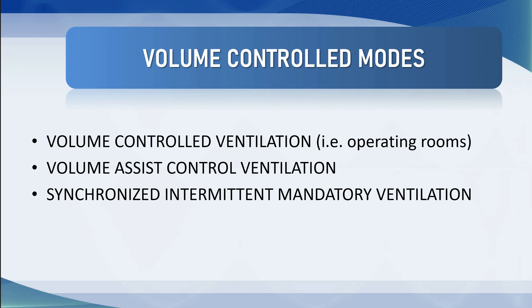There are a number of different volume control modes, but they generally fall into three. One is pure volume control ventilation, though I don't believe pure volume control is built into any modern anaesthetic machines or ICU ventilators — they usually have some accommodation for when the patient starts to breathe spontaneously. If a patient breathes while the ventilator simultaneously delivers a controlled breath, those breaths could be stacked, causing an enormously large tidal volume and significant volume trauma to the lungs. The most common mode on the volume side is volume assist control ventilation.